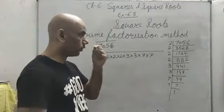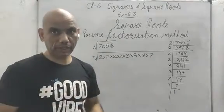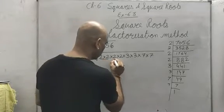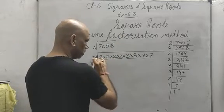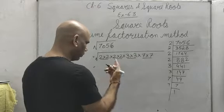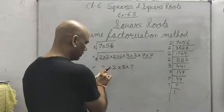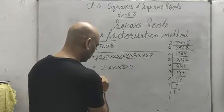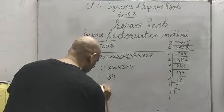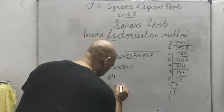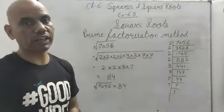As we understand, from a pair one digit comes out. So out of two 2s a pair gives one 2, four 2s give two 2s; two 3s give one 3; two 7s give one 7. So the square root is 2 × 2 × 3 × 7 = 84. Under root 7056 equals 84. This is your final answer — and this is known as the prime factorization method.